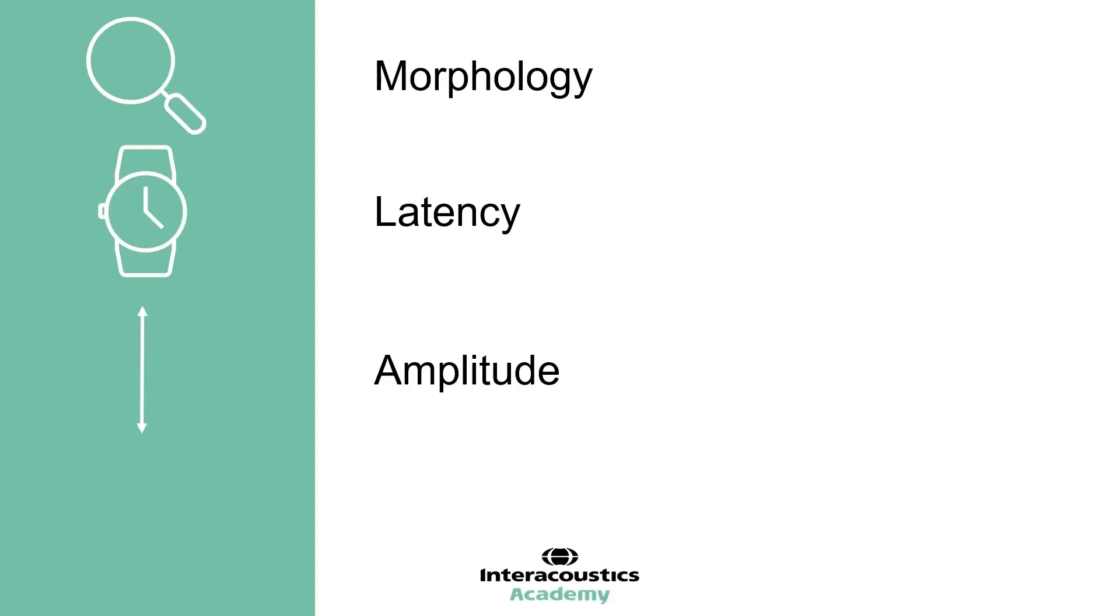One of the most valuable tools for determining whether a response is present is to look at neighboring intensity levels. An expected pattern of results is to see a latency shift with varying intensity. Wave 5 should appear at shorter latencies for louder intensities, and at longer latencies for quieter intensities. An amplitude decrease is also expected for quieter intensities, and by the same token, an increase in amplitude should be seen for louder intensities.